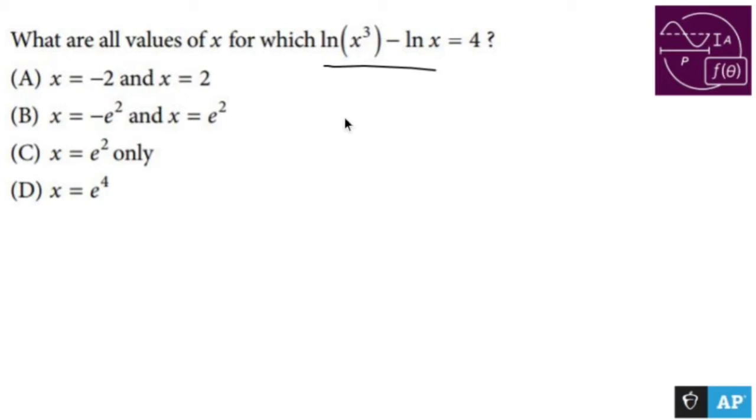And if I'm subtracting two logs or two ln's in this case, you divide the inside. So x³ over x is going to equal 4, where this is trapped inside ln.